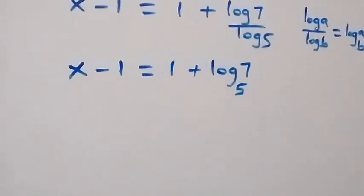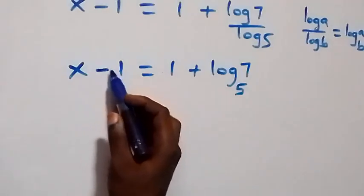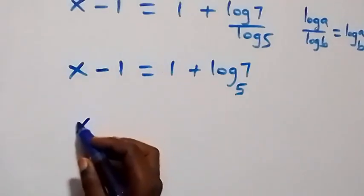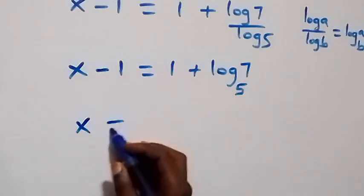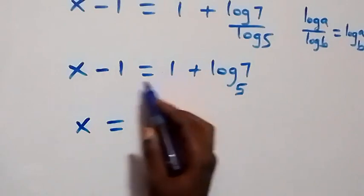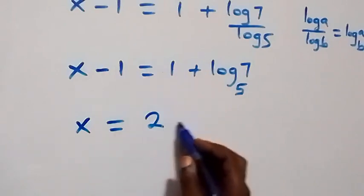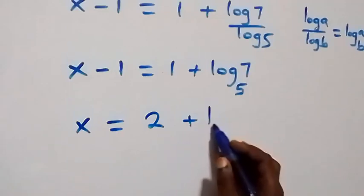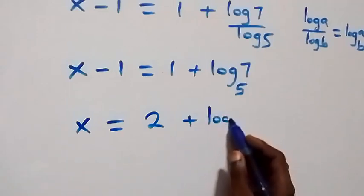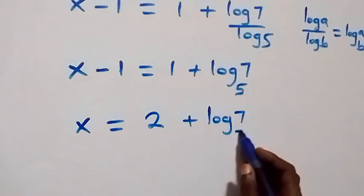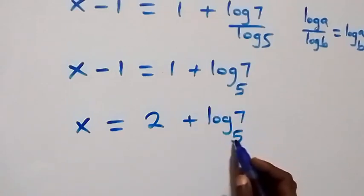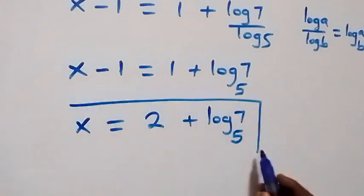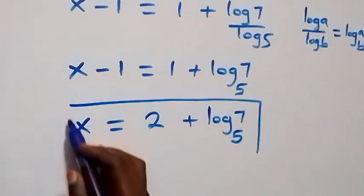Since we are finding x, we take minus 1 to the other side, where it becomes plus 1. So we have x equals 1 plus 1, which is 2, plus log 7 to base 5. That is the value of x.